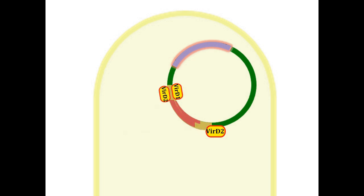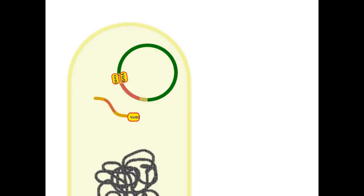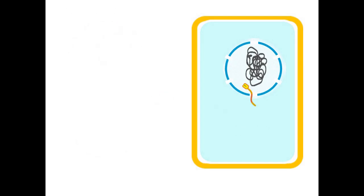The cell produces single-stranded T-DNA molecules that remain attached to VirD2 at one end. VirD2 directs the transfer of the T-DNA into a plant cell and eventually into the nucleus in a process similar to bacterial conjugation. Within the plant cell nucleus, the T-DNA gets integrated into the genome.